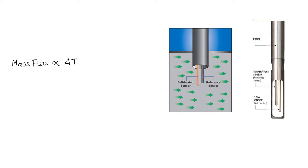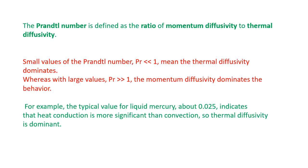If the fluid that is flowing through this thermal mass flow meter is not conductive enough, then whether this principle still hold true or we will be able to measure the mass flow meter? I think no. And this is what the Prandtl number signifies. Prandtl number is basically the ratio of momentum diffusivity to the thermal diffusivity.